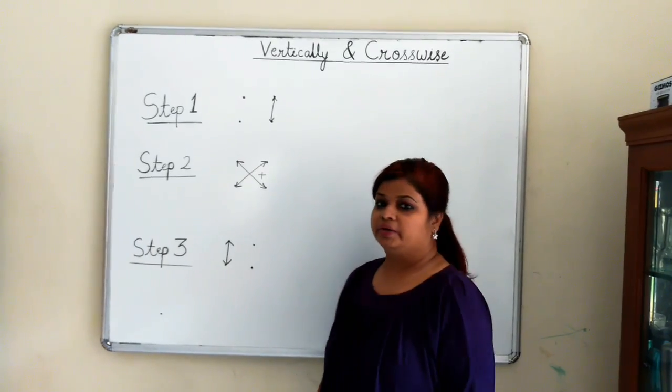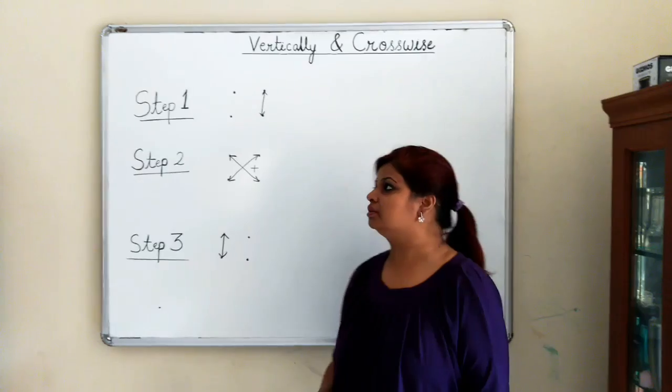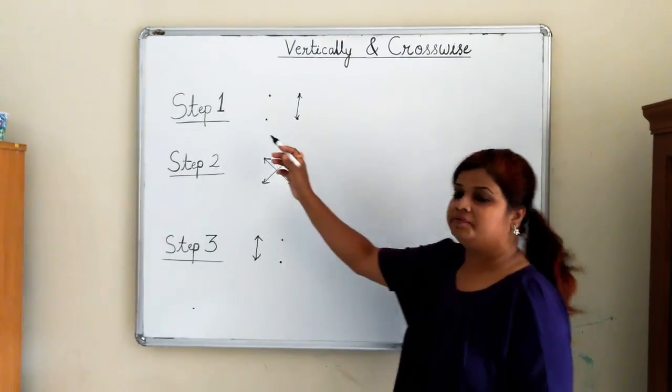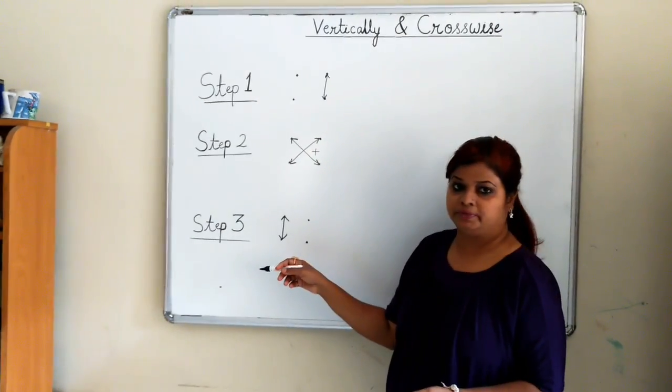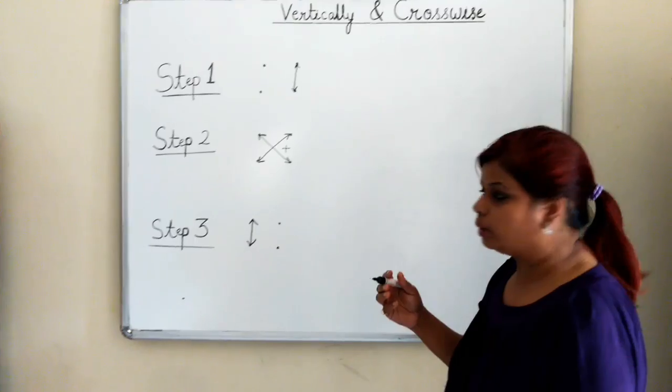Hi friends, I am Shweta here. Today I am going to introduce a new method of multiplication. The method's name is vertically and crosswise. I have drawn steps here. These are three steps of the particular method. I will take an example and explain how it is done.